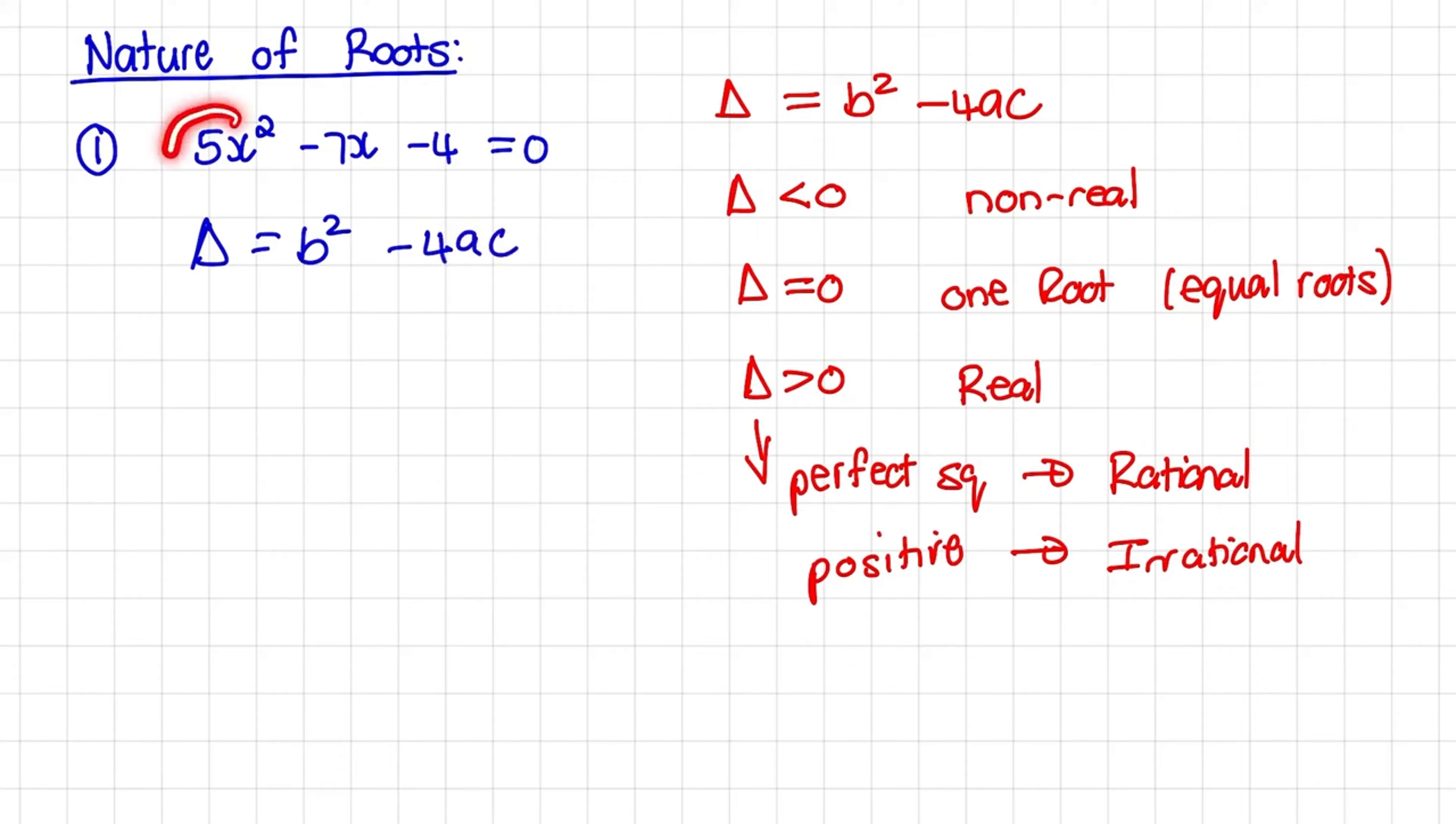a is the coefficient of x squared, b is the coefficient of x, and c is the constant value.